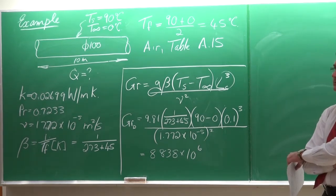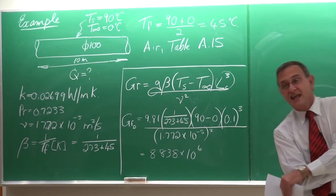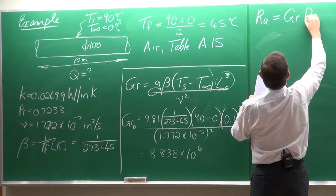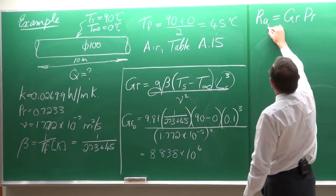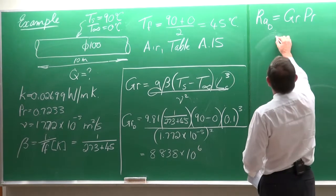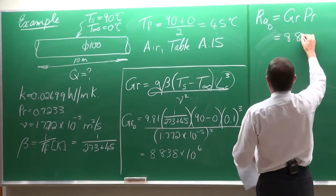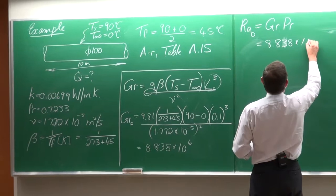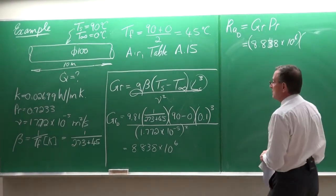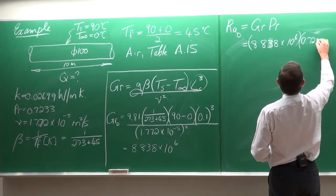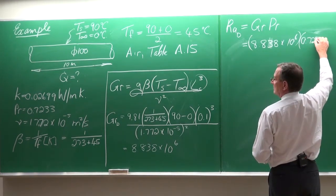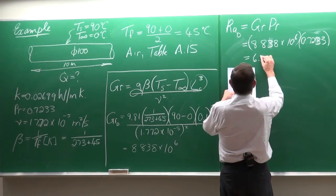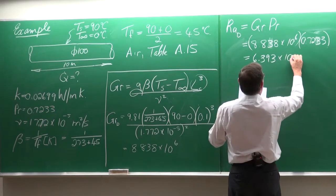The Rayleigh number is equal to the Grashoff number multiplied by the Prandtl number. It is also based on the diameter: RaD = 8.838×10⁶ × 0.7233. The result is a Rayleigh number of 6.393 × 10⁶.